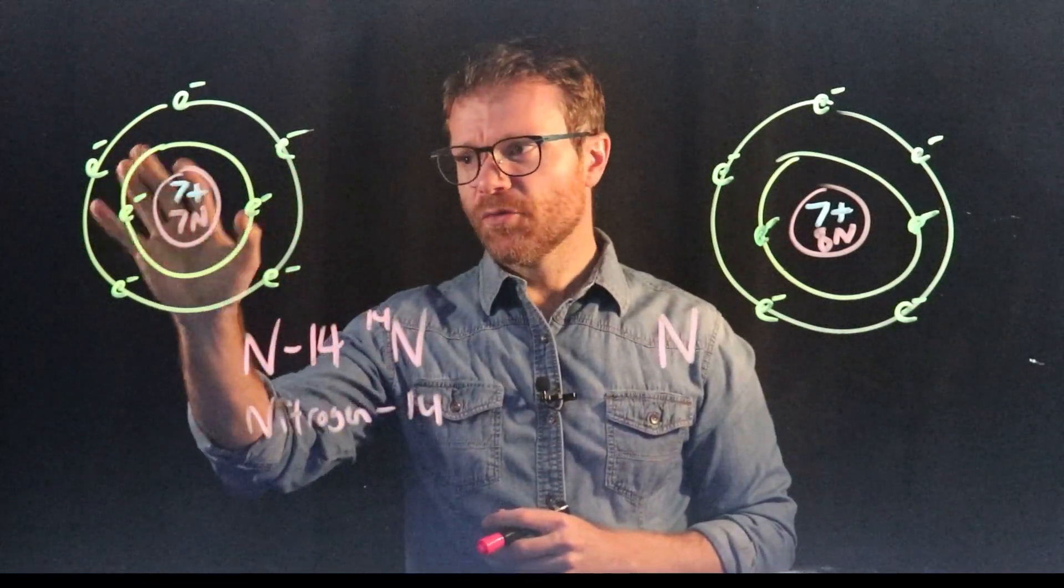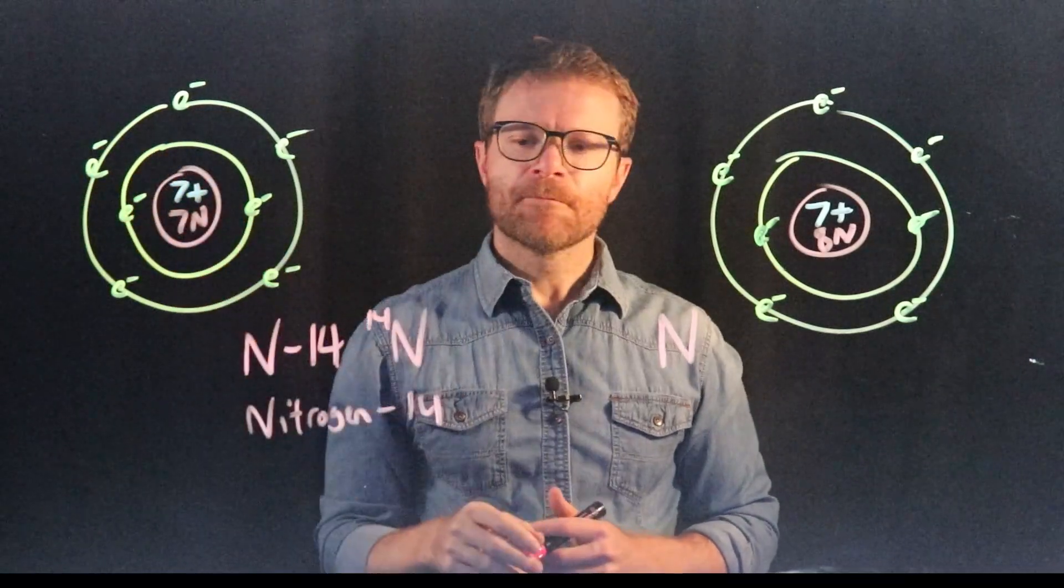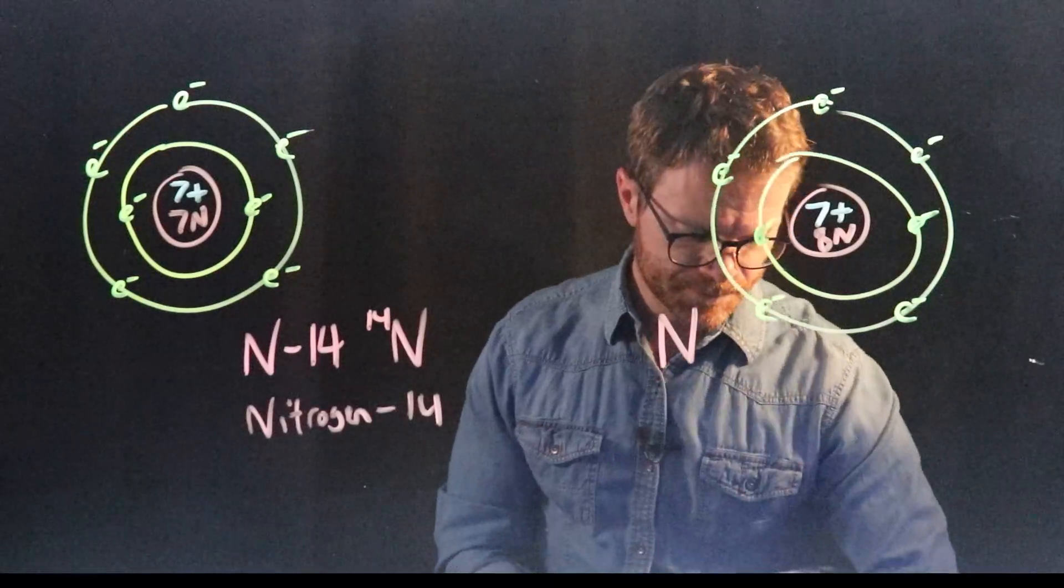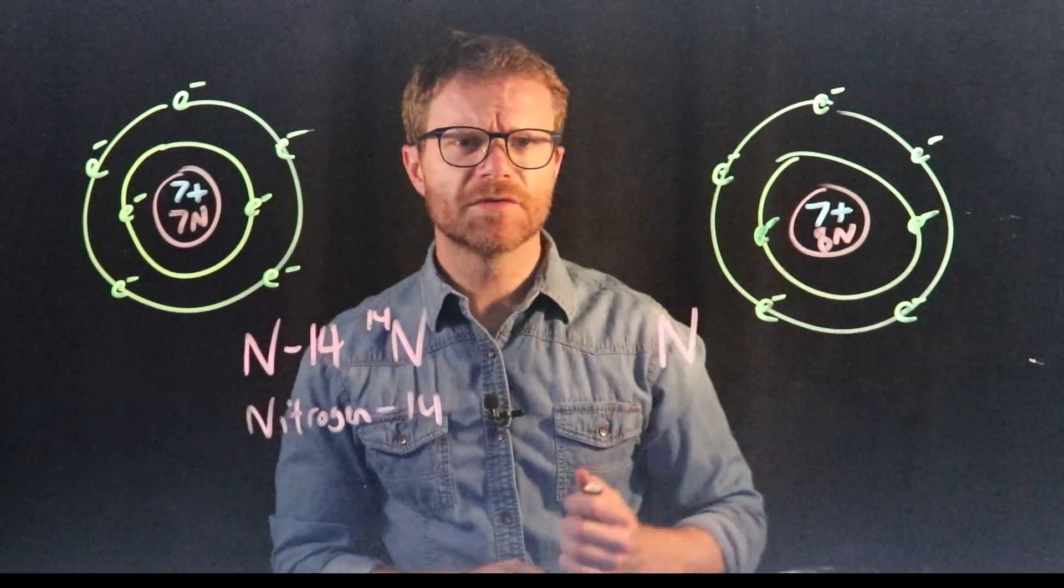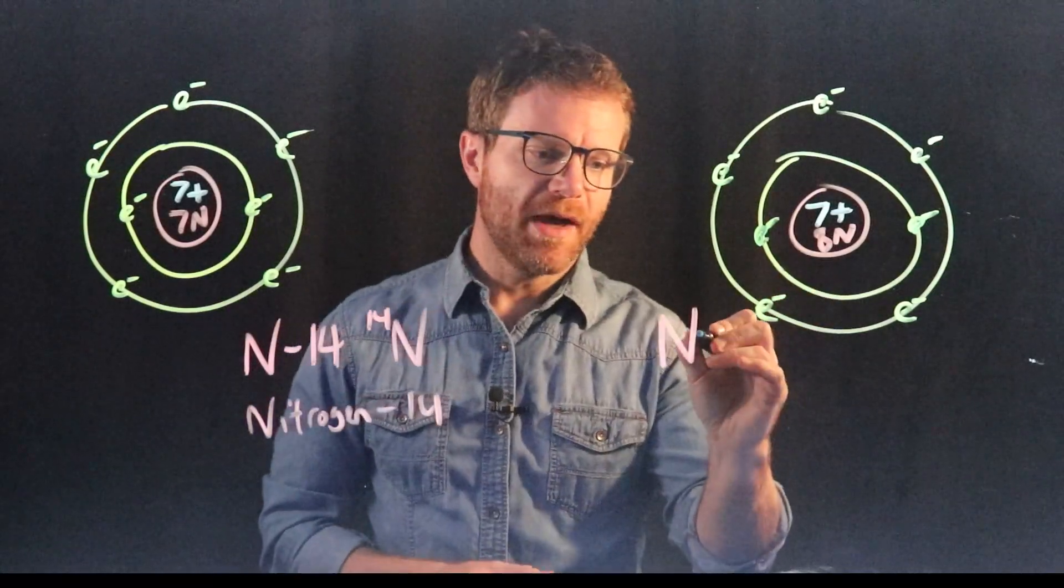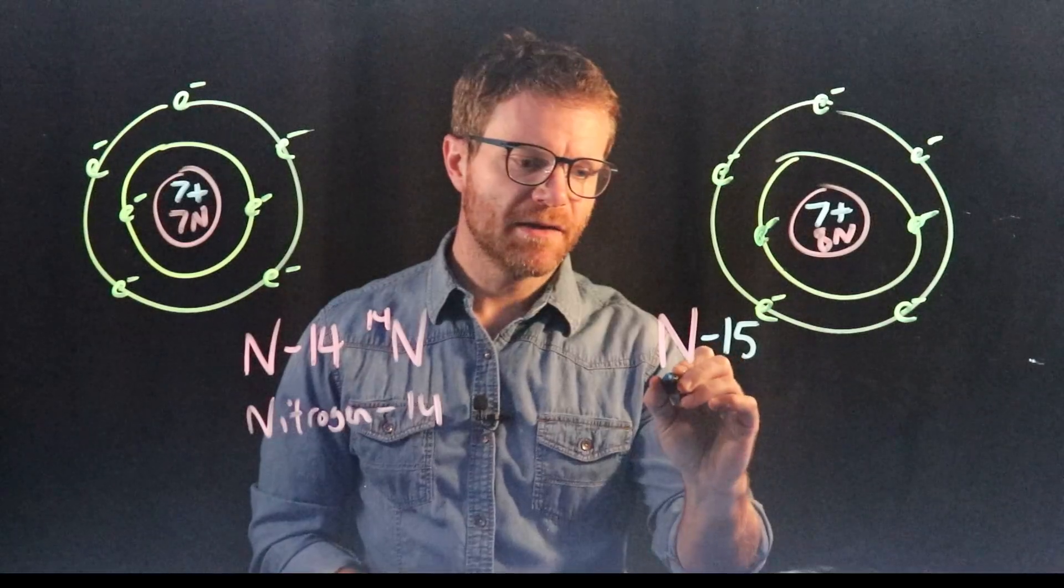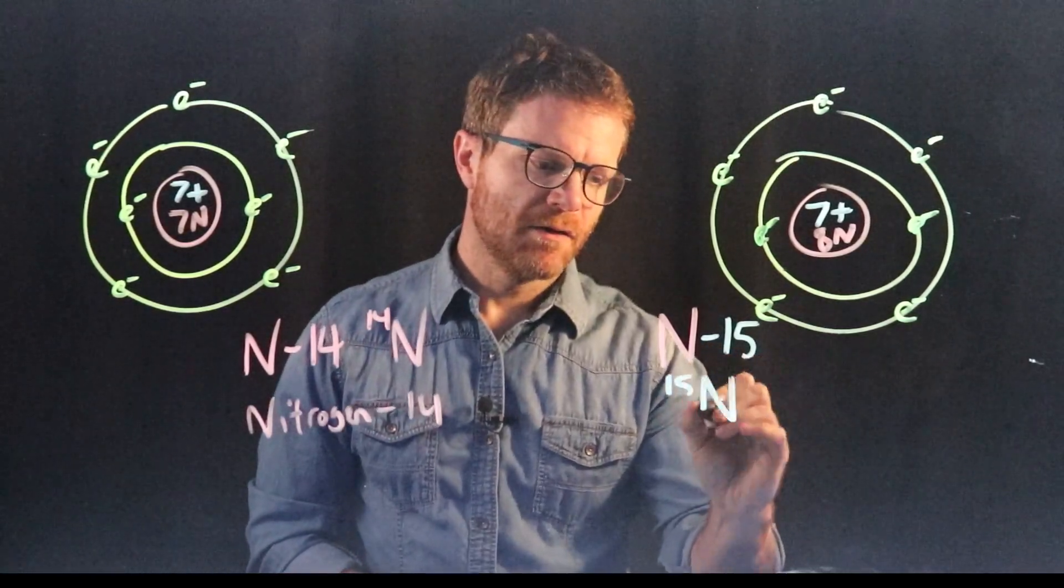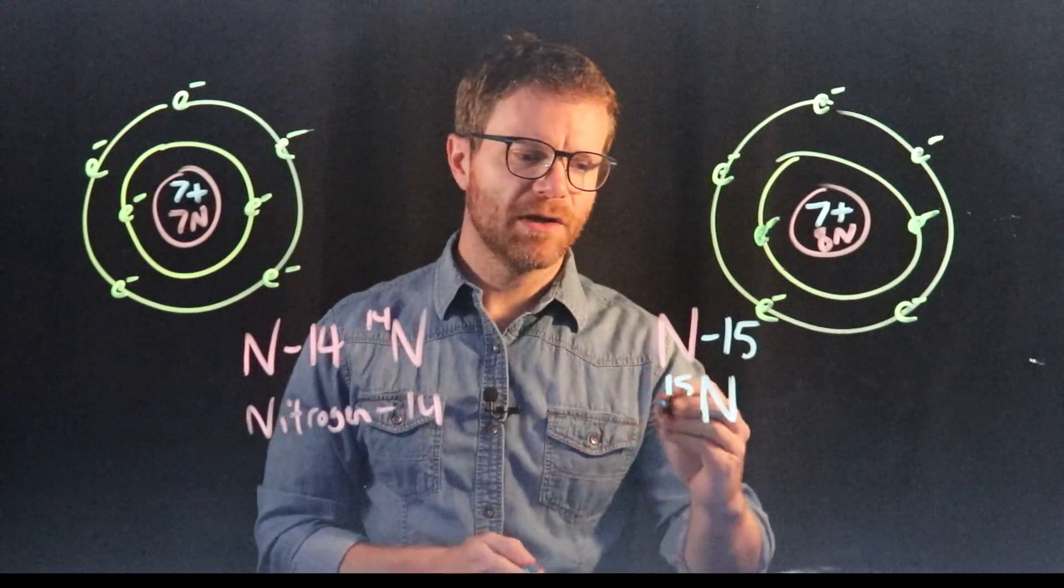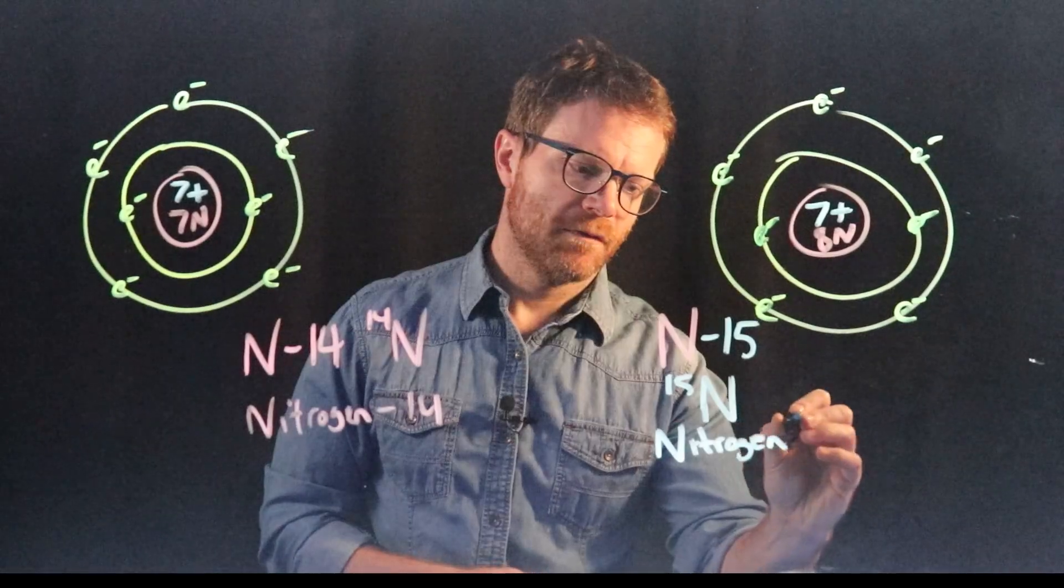So seven protons plus seven neutrons equals the total atomic mass of 14. So this is N14. Let's take a look at this one over on this side. It's got seven protons, but it has eight neutrons. That means it has an atomic mass of 15. So we would call this N15. We could also write it this way. The 15 up in the corner and then the atomic symbol written out like it would be normally. Or we could call this nitrogen 15.